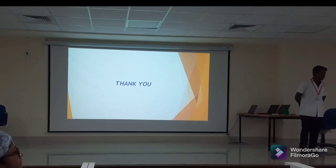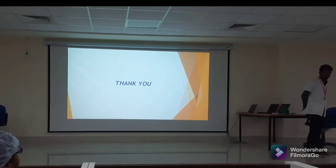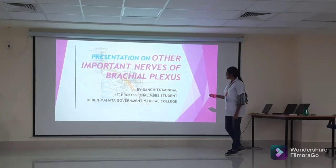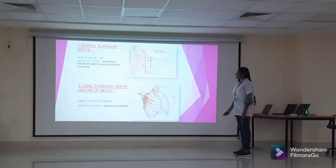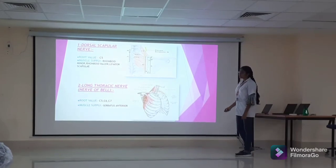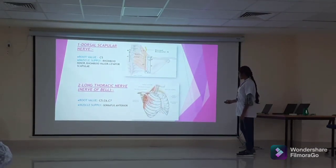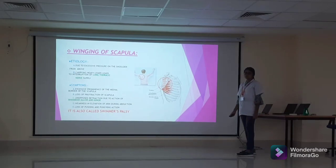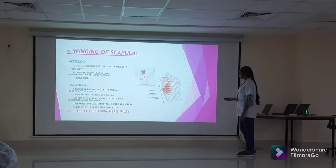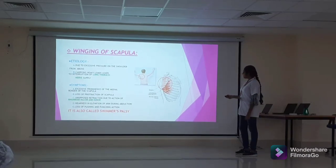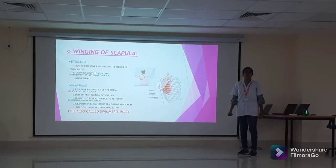The next presenter will discuss other important nerves of the brachial plexus. Branches from the roots include the dorsal scapular nerve, which supplies the rhomboid major, rhomboid minor, and levator scapulae. The long thoracic nerve, also called the nerve of Bell, supplies the serratus anterior muscle. Clinically, winging of the scapula is often due to excessive pressure on the shoulder carrying heavy loads, injuring the long thoracic nerve. Symptoms include prominence of the medial border of the scapula, loss of protraction of the scapula, inability in elevation of the arm above the horizontal, loss of pushing and punching action, and swimmer's shoulder.